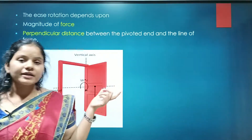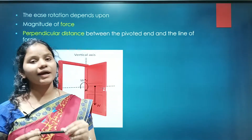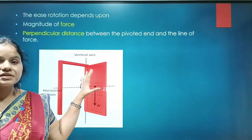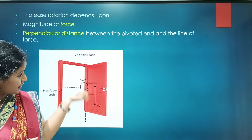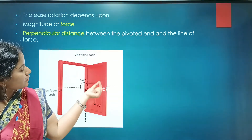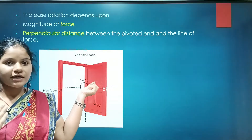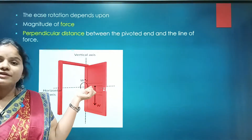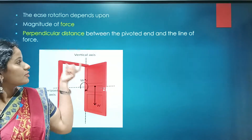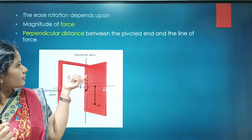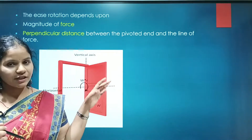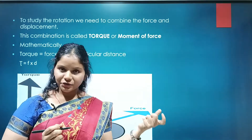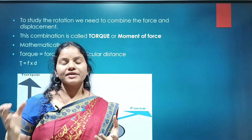Rotation depends on two factors: magnitude of force and perpendicular distance. Consider this door — it is fixed at one end at the hinge. When you apply a force at the handle, less force is needed because the distance is more. When you apply force closer to the hinge, the distance is less and you need more force to open the door. So rotation depends on magnitude of force and perpendicular distance. To study rotation, we combine these two factors — this combination is called torque.